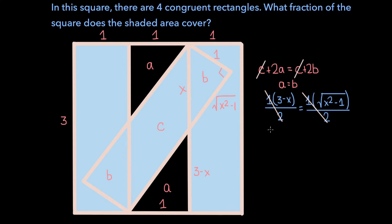And if we square both sides, on the left side, we get 9 minus 6x plus x squared. And on the right side, we get x squared minus 1. The x squared terms cancel, and so we're left with